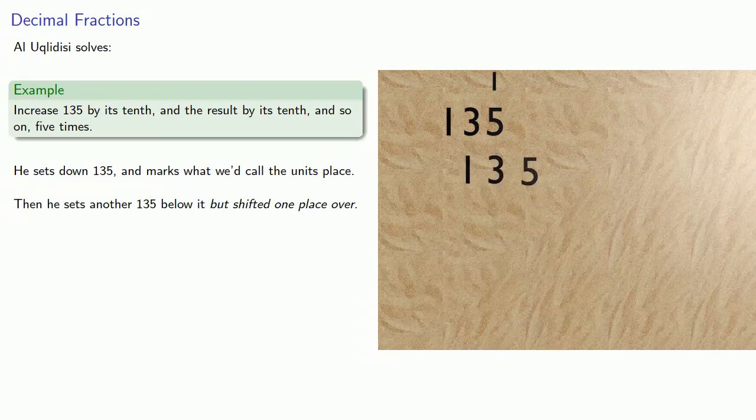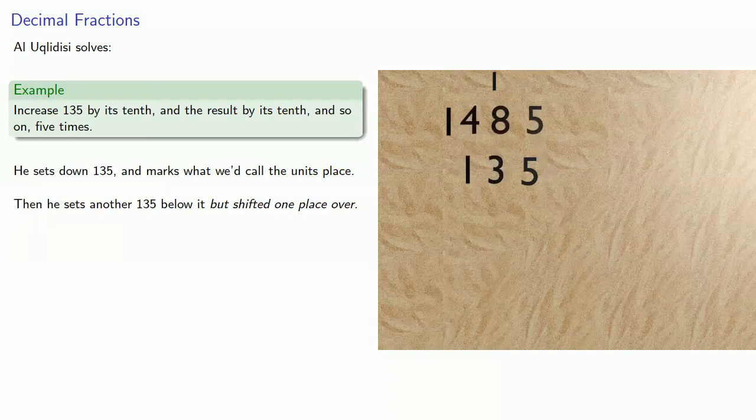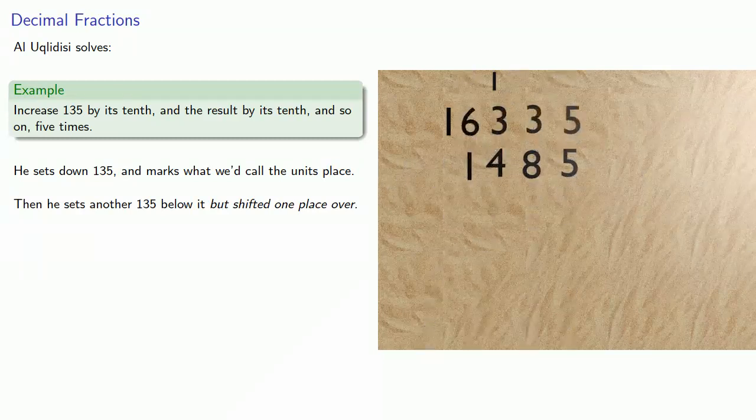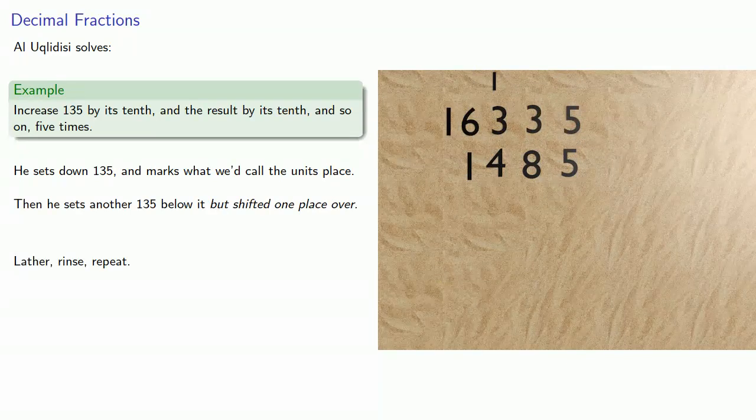And adding will give 135, increased by a tenth. But we want to increase this by its 10th, so we'll set down a 1485, shifted 1 place over. Then add. Then lather, rinse, repeat to complete the increase.